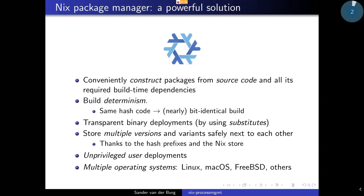As you may probably already know, the Nix Package Manager is a powerful solution. It offers all kinds of nice features: you can conveniently construct packages from source code and all required build time dependencies. It offers build determinism, transparent binary deployments by downloading existing builds from a binary cache. It allows you to store multiple versions and variants of the same packages safely next to each other. You can do unprivileged user deployments — if you want to install packages, you don't need to be root. It can also be used on multiple operating systems. In addition to Linux, it is also well supported on macOS, and very recently FreeBSD was also accepted into the FreeBSD ports tree. With some little effort, you can also use it on other Unix-like operating systems as well.